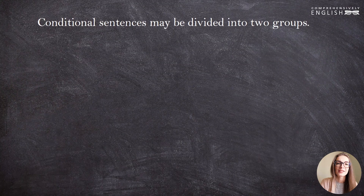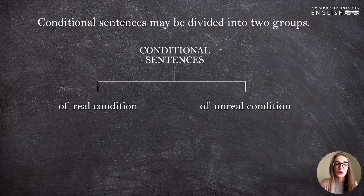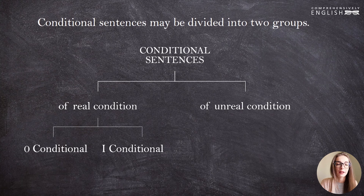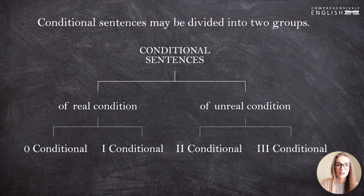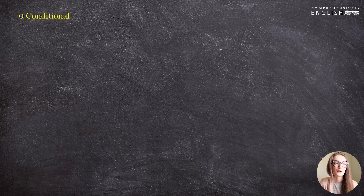I invite you to start with a little revision of those four types of conditional sentences that we previously discussed in detail. As you remember, we can divide conditional sentences into two groups: those that speak of real conditions and those that describe unreal conditions. Zero conditional and first conditional belong to the indicative mode, while the second conditional and third conditional are in the subjunctive mode because they express things contrary to fact.